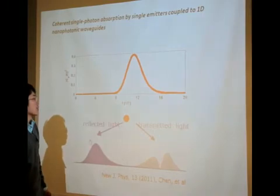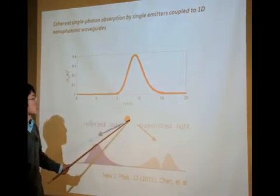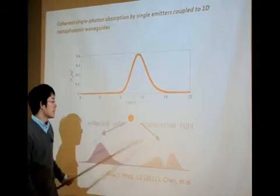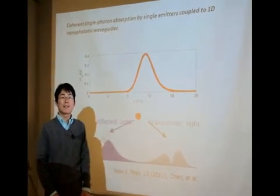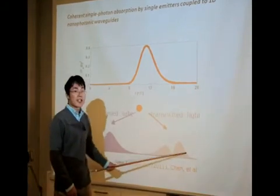The reason is the following. The re-emission from the emitter has two emission channels, namely the forward one and the backward one. In order to enhance the atomic excitation, we have to suppress the forward channel.